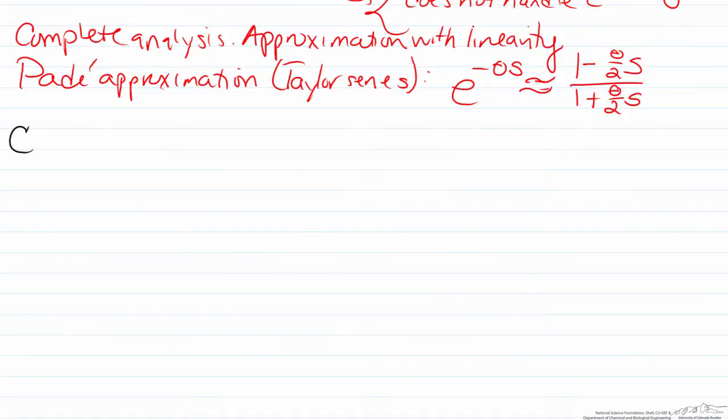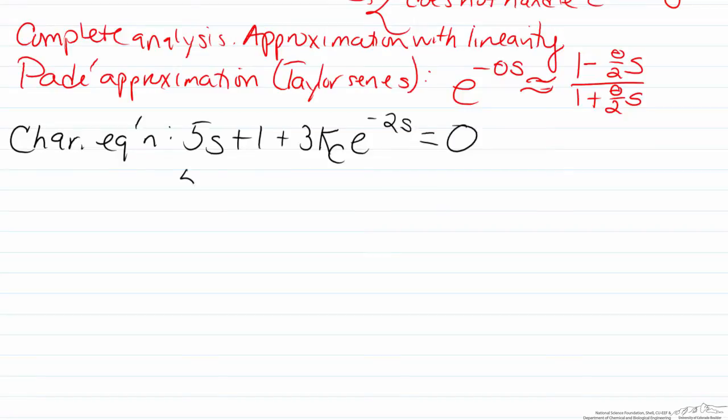So for this process the characteristic equation provided was 5s plus 1 plus 3Kc multiplied by e to the negative 2s equals 0. So we will substitute in the Pade approximation, so here theta is 2,